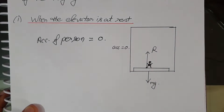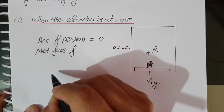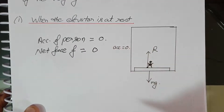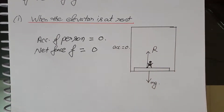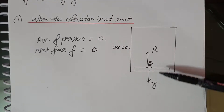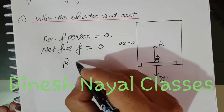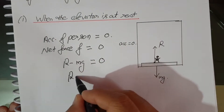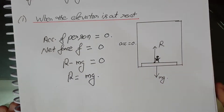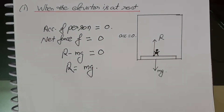When the acceleration is zero, the net force on the person is also zero. There are two forces acting: the normal reaction R and weight mg. Since the net force is zero, we can write R minus mg equals zero, therefore R equals mg. The apparent weight equals the actual weight of the person.